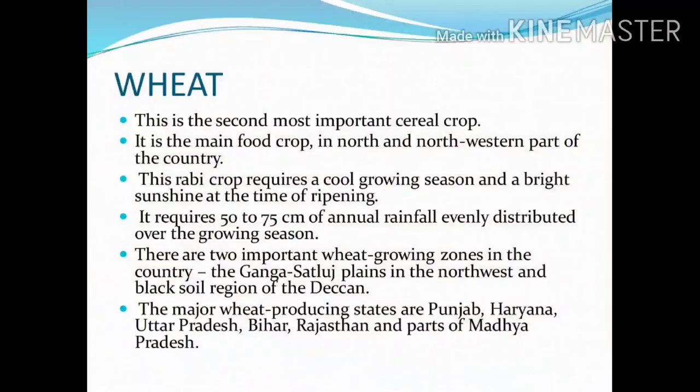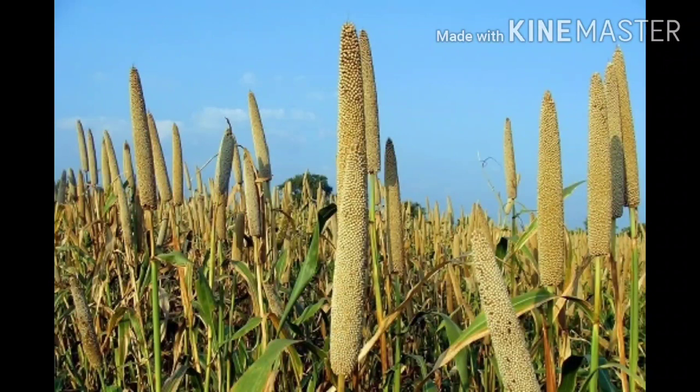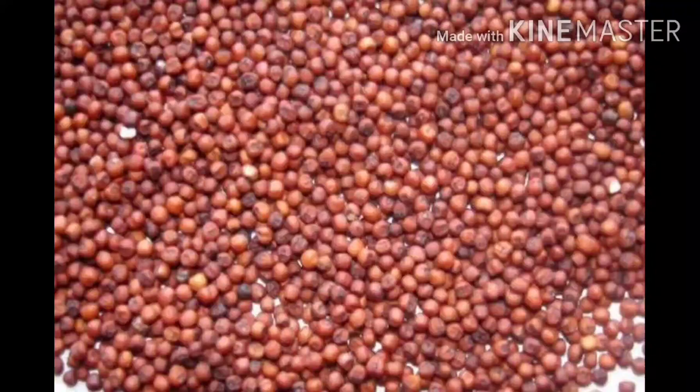Let us start millets. Jowar, Bajra, and Ragi are the important millets grown in India. Though these are known as coarse grain, they have very high nutritional value. For example, Ragi is very rich in iron, calcium, and other micronutrients and roughage. Bajra grows well on sandy soils and shallow black soils. Major Bajra-producing states are Rajasthan, Uttar Pradesh, Maharashtra, Gujarat, and Haryana. Ragi is a crop of dry regions and grows well on red, black, sandy, loamy, and shallow black soils.